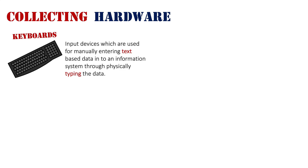Firstly, there is a keyboard. Keyboards are input devices which are used for manually entering text-based data into an information system through the user typing it. So they press A on the keyboard and A appears on screen, displayed to them through the monitor. Now we all know what a traditional keyboard looks like, but there are also keypads stationed at things such as ATM machines, and digital keypads which appear on your phone, which aren't physical at all — they're software-based — and they all allow users to enter symbol-based data.